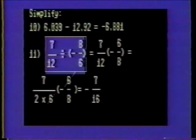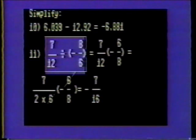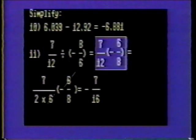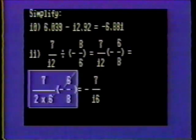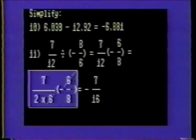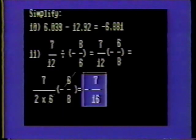Number eleven: seven-twelfths divided by negative 8.6. First, invert the denominator of negative 8.6 and multiply it by the numerator. Now the problem reads seven-twelfths times negative 6.8. After canceling the sixes, we are left with negative seven divided by two times eight, which is negative seven-sixteenths.